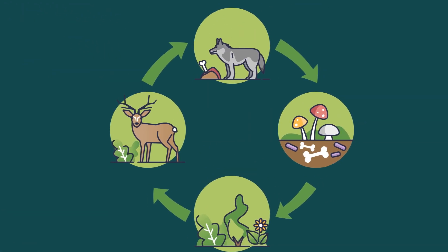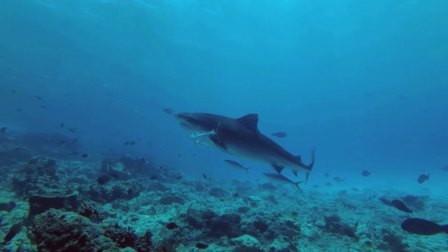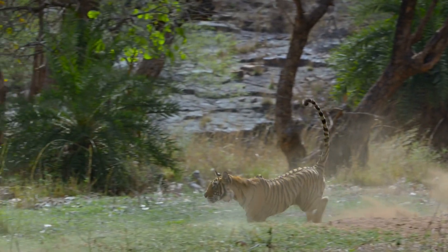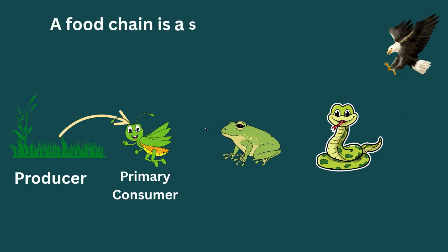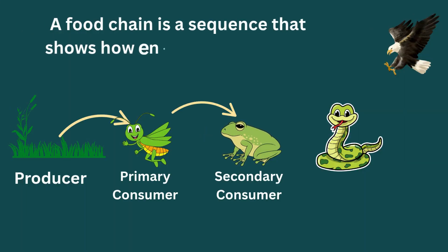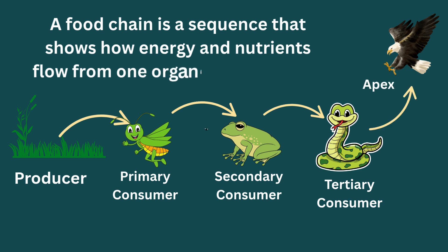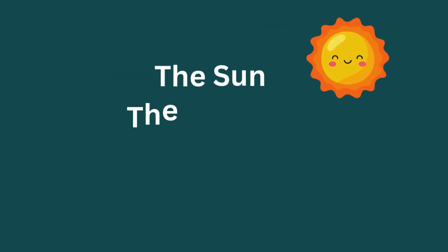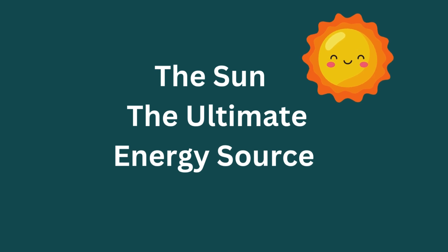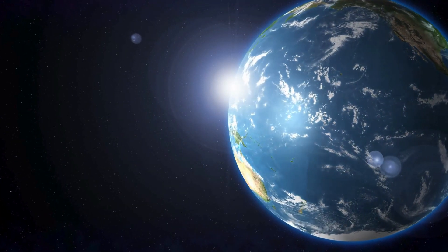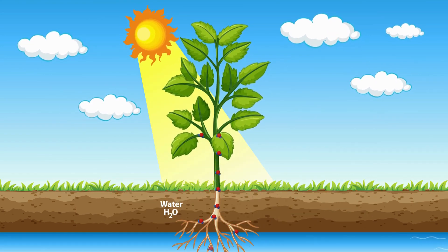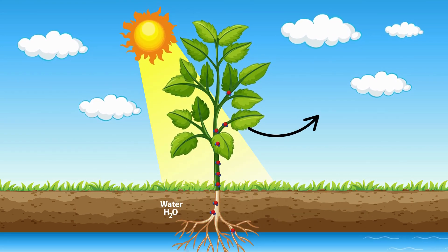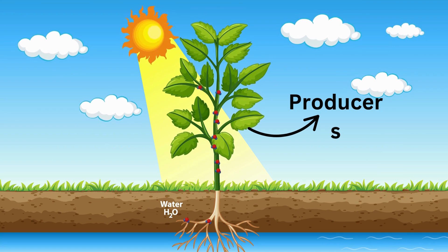What is a food chain? In every habitat there's a one-way path that shows who eats who, and that's called a food chain. A food chain is a sequence that shows how energy and nutrients flow from one organism to another. The sun is the original energy source for nearly all life on Earth. The food chain always begins with an organism that can directly use sunlight to make its own food. These are called producers, like green plants.